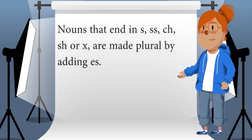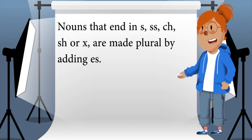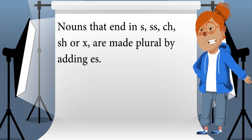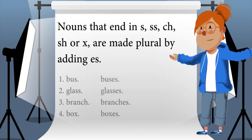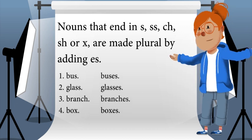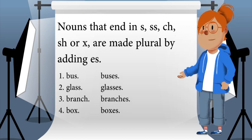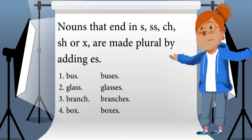Nouns that end in s, ss, ch, sh, or x are made plural by adding es. Bus becomes buses, glass becomes glasses, branch becomes branches, box becomes boxes.